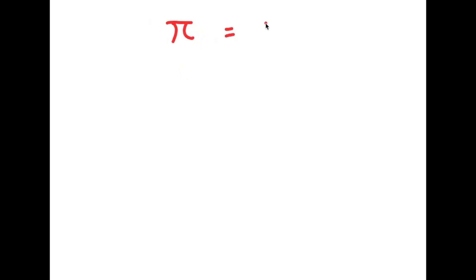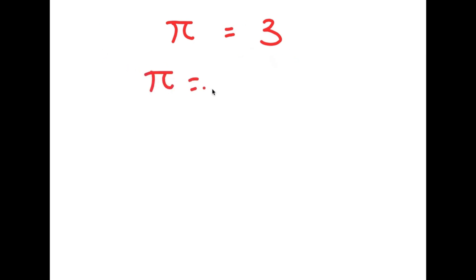In this video, I'm going to be proving to you guys that pi is equal to 3. As you probably already know, pi is an irrational number, meaning it doesn't have a whole number value. It's actually equal to 3.14159 and on and on forever — that's why it's irrational. In this video, I'm going to be proving that pi is actually equal to 3, and not the irrational number that we all know it is.